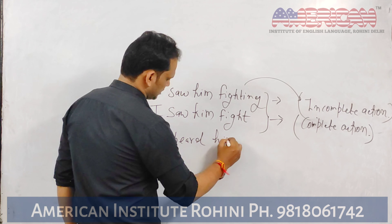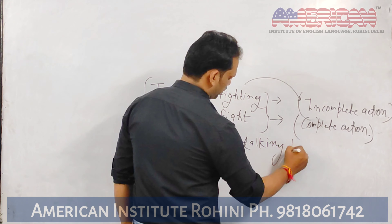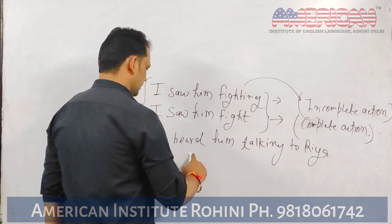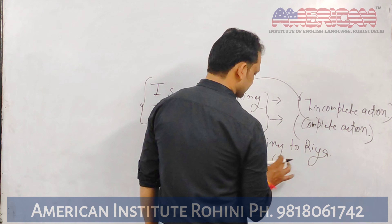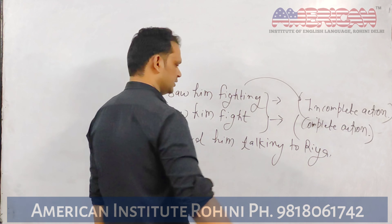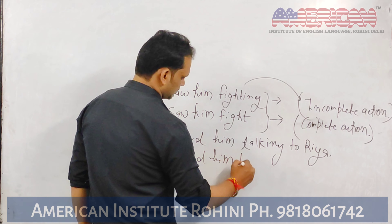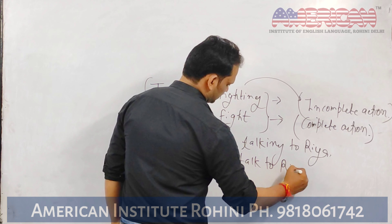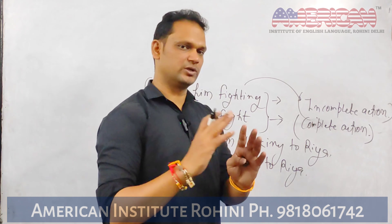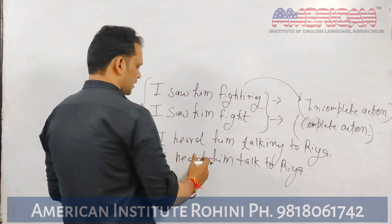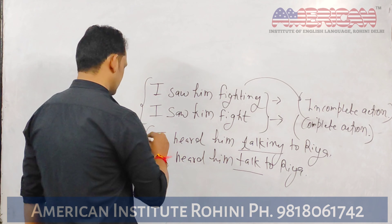Let's take another sentence: I heard him talking to Ria. This means I heard him and he was in the middle of talking to Ria — the conversation was ongoing at that time. But if I say I heard him talk to Ria, it means I know that he had a conversation with Ria — the conversation was complete, and I heard the whole thing. So here we use the first form of the verb, and there we use -ing.